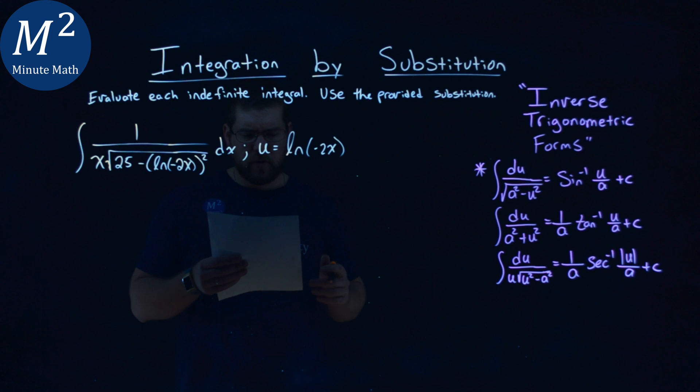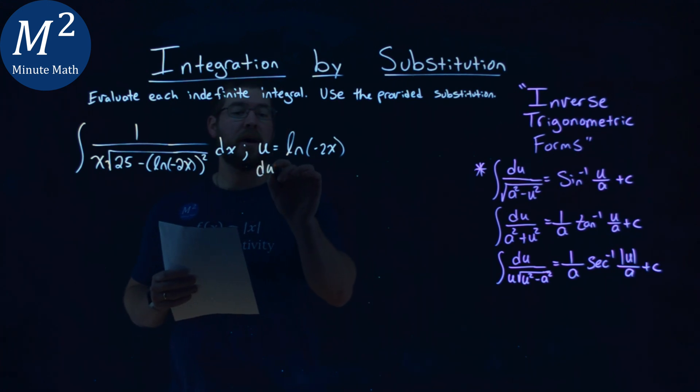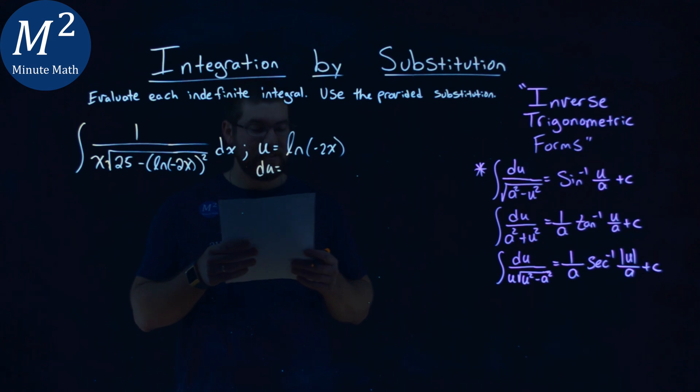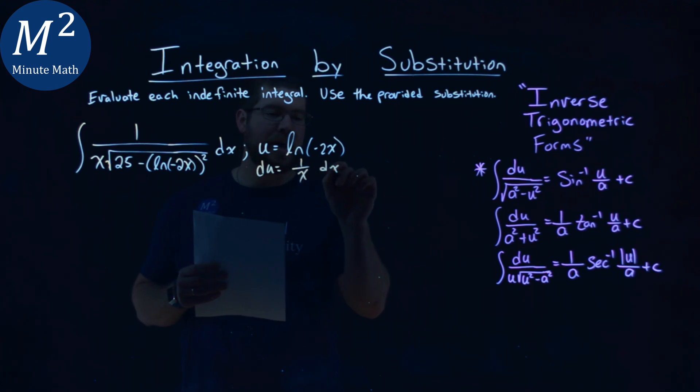Now, we're given a u value, so let's go find my du value. My du value, the integral of the natural log of negative 2x, comes out to be just a 1 over x dx.